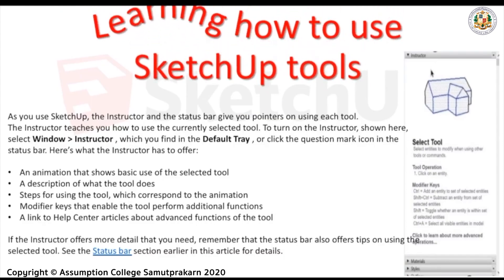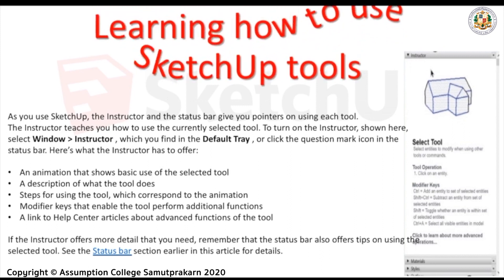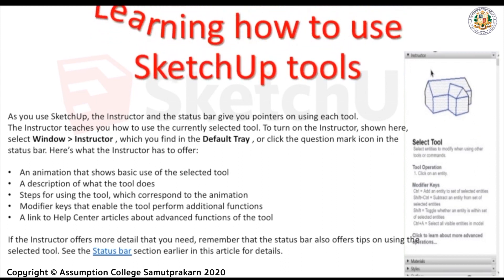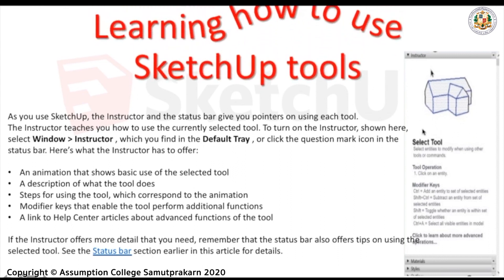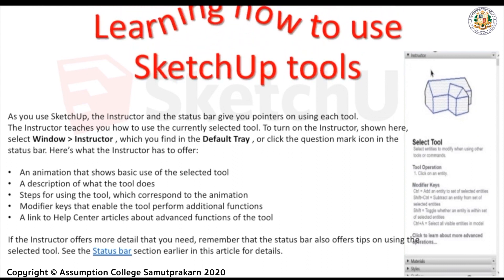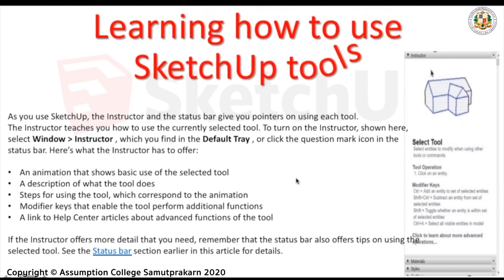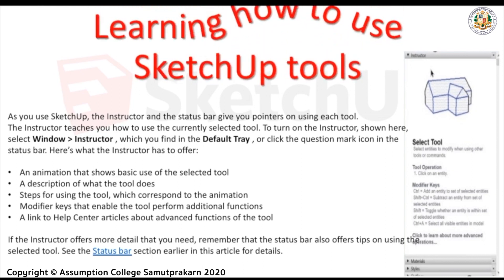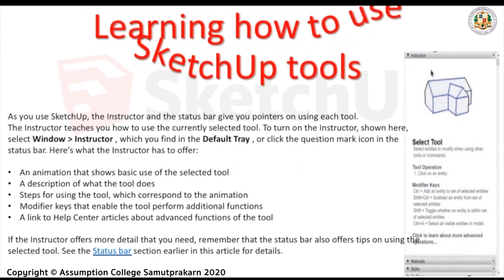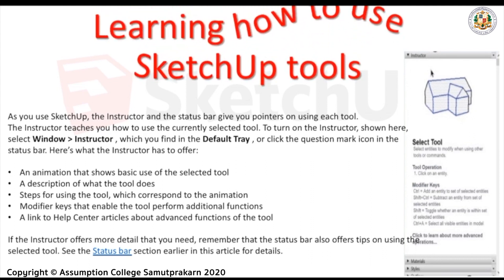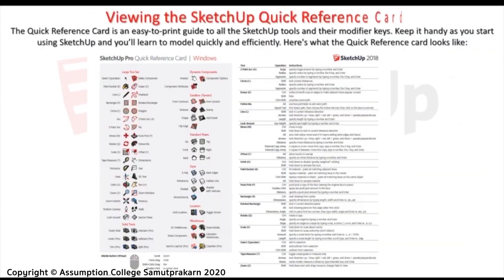Now let's learn how to use SketchUp tools. As you use SketchUp, the Instructor and the status bar give you pointers on using each tool. The Instructor teaches you how to use the currently selected tool. To turn on the Instructor, select Window > Instructor, which you find in the default tray, or click the question mark icon in the status bar. The Instructor offers: an animation showing basic use of the selected tool, a description of what the tool does, steps for using the tool, modifier keys that enable additional functions, and a link to Help Center articles about advanced functions.